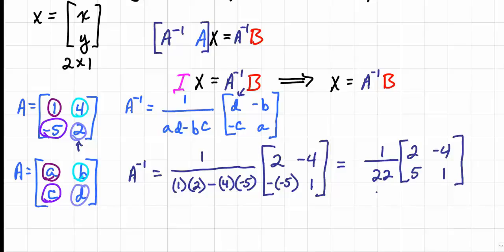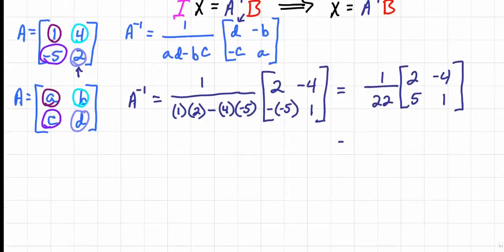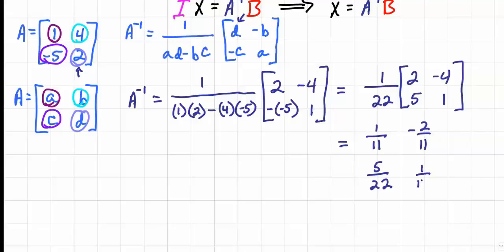Distributing the scalar 1 over 22 into each entry: 1/22 times 2 gives 1/11; 1/22 times negative 4 gives negative 2/11; 1/22 times 5 gives 5/22; and 1/22 times 1 gives 1/22. This is A inverse.